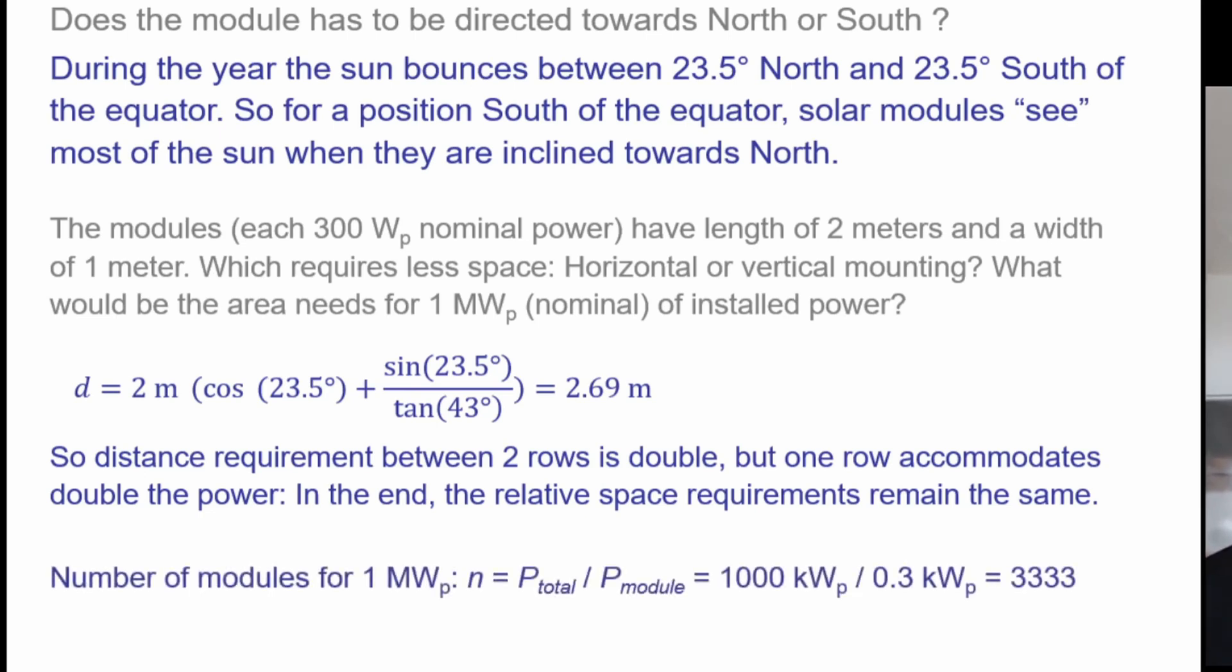The number of modules for 1 megawatt. So we have the total power 1 megawatt and we have 300 watt each one. So in total, we need 3,333 modules.